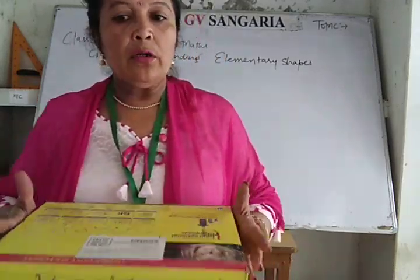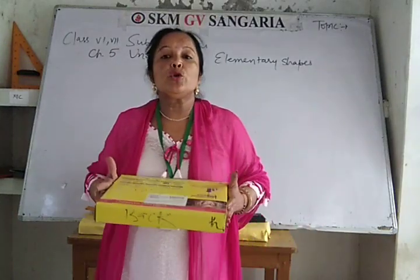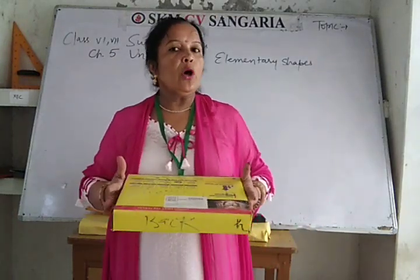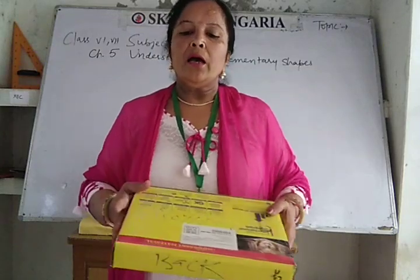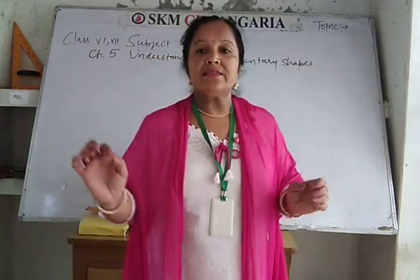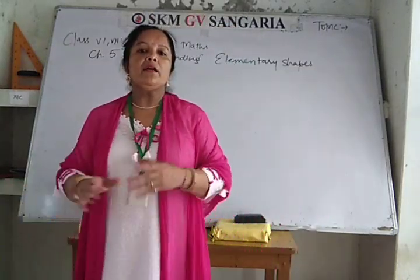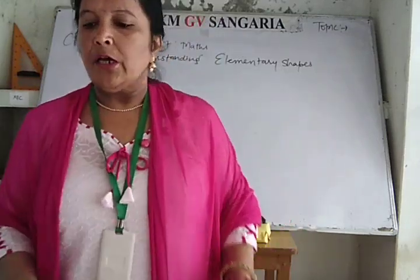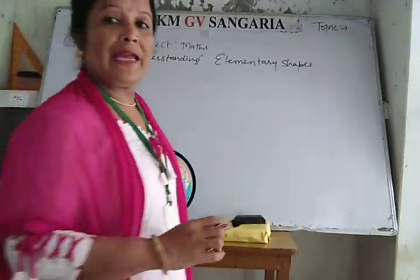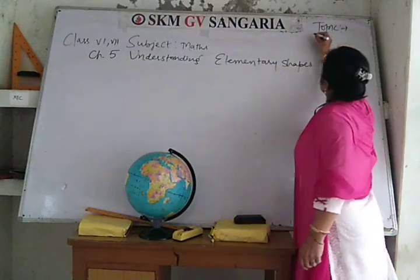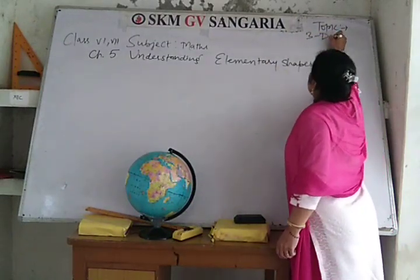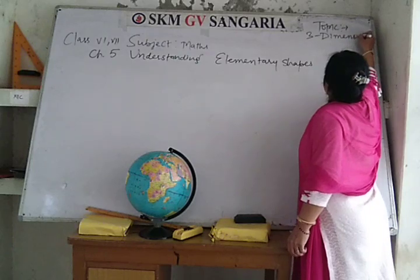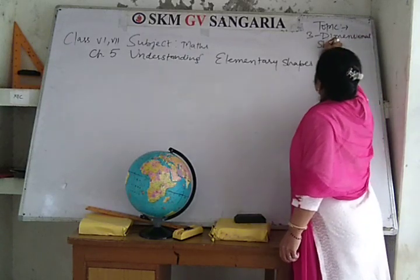You can see your geometry box also — that is also a cuboid. The object which has length, breadth, and height, those are called 3D shapes. So today our topic is 3D shapes, or three-dimensional shapes.